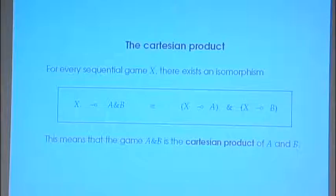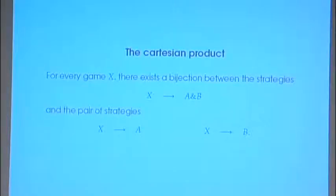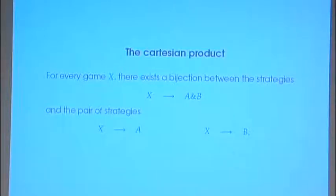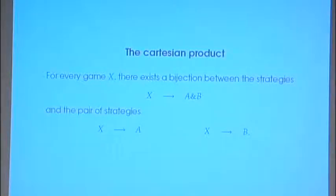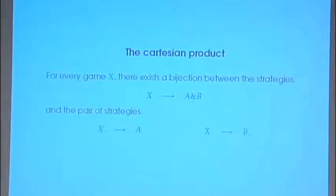There is a bijection between maps from X to A with B, and the pair of maps from X to A and from X to B. Using categories is useful and natural.